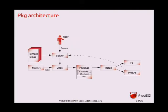The basic package architecture is presented on a diagram. We have user requests that come to the solver. The solver converts the request to an internal representation, resolves tasks, and converts it to a set of jobs — for example, install this package, fetch this package, remove this one, and upgrade that one. After that, these jobs are executed and you have a new filesystem status: new packages and a new package database.